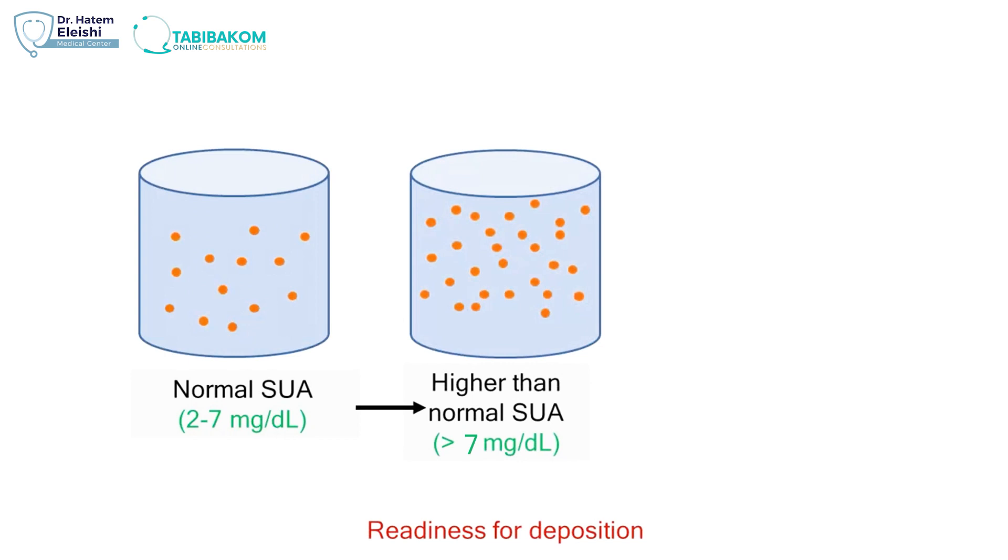So this is the start of the state of supersaturation. This is the readiness. I'm ready now to deposit. The uric acid is ready to deposit, just like the sugar was ready to deposit at the bottom of the glass. It's a stage of supersaturation, ready. It's only readiness. It did not deposit.